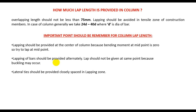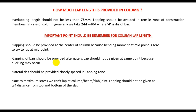Lateral ties should be provided closely spaced in the lapping zone. When lapping is used in a column, the lateral ties must be placed very closely so that they reduce the tendency of buckling. Also, due to maximum stress, we cannot lap at the column-beam or slab joint.